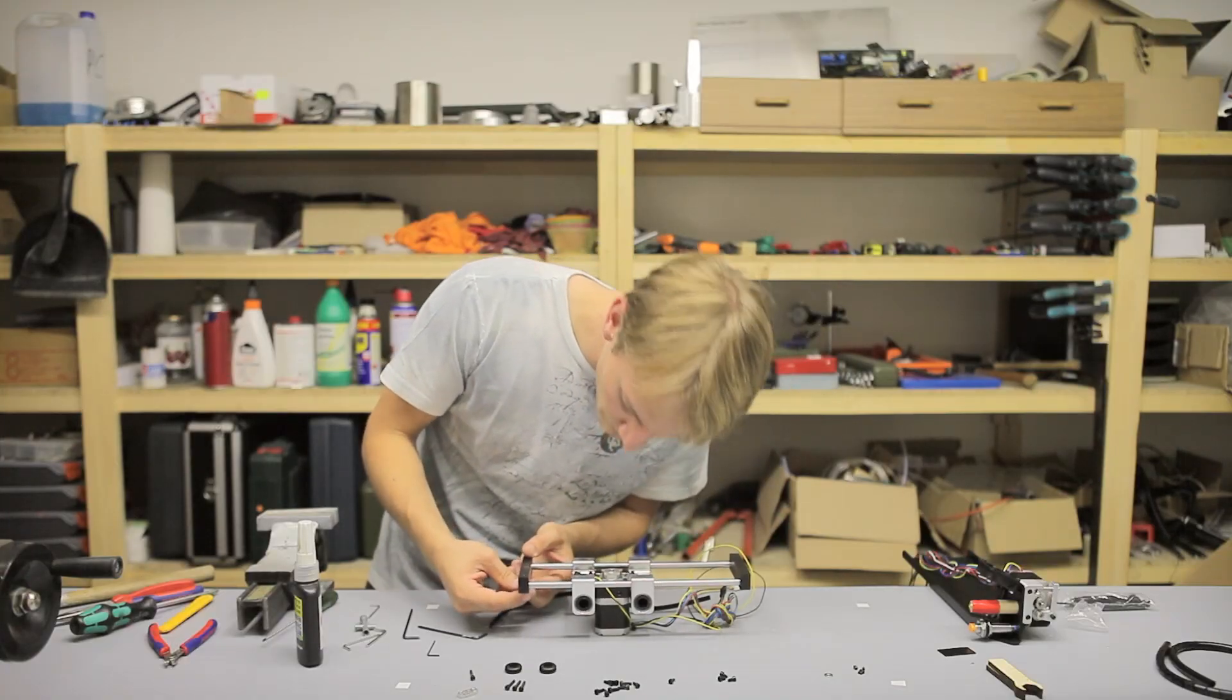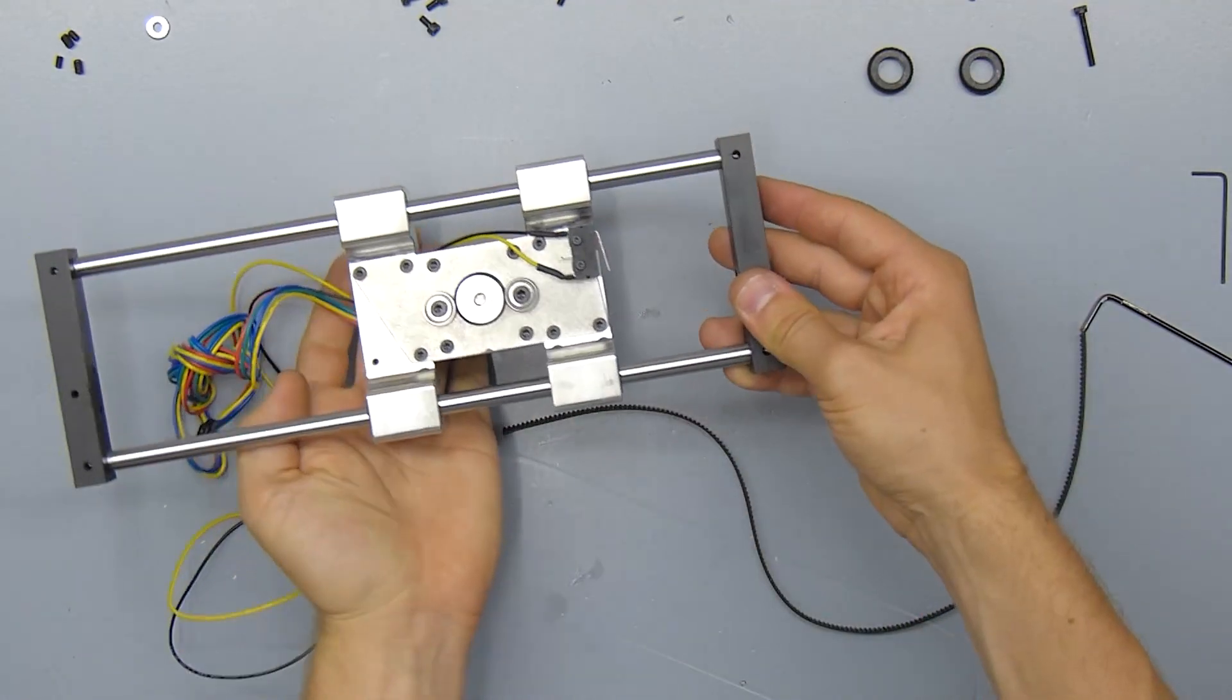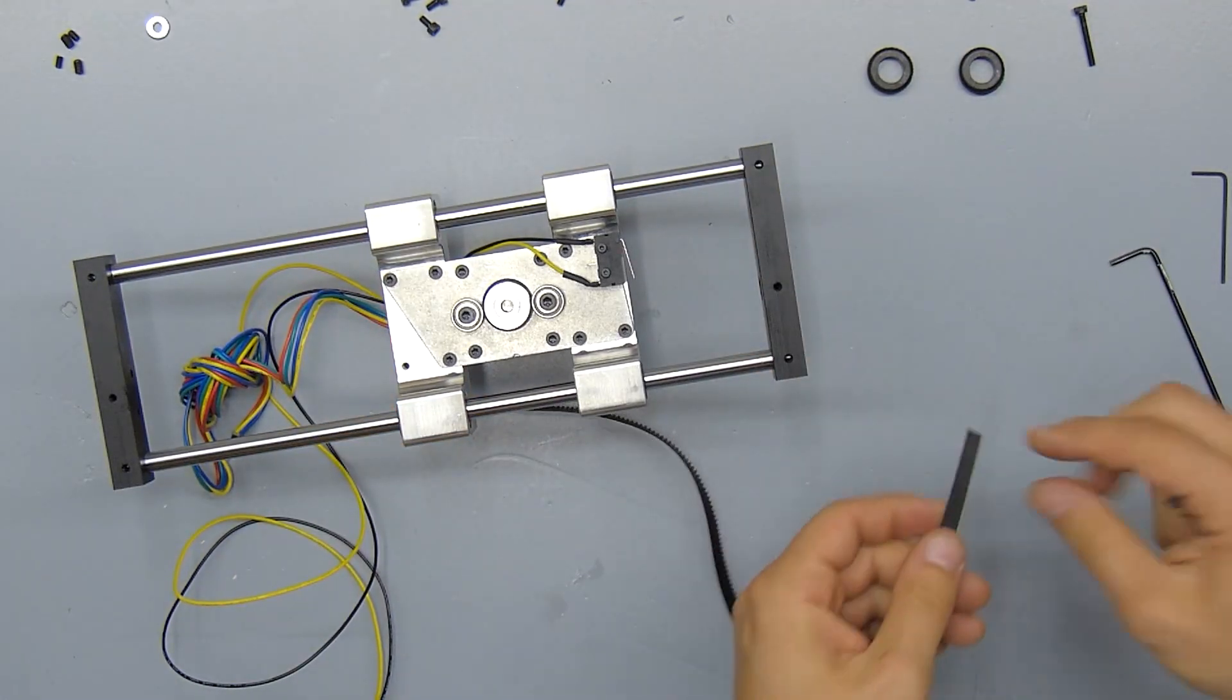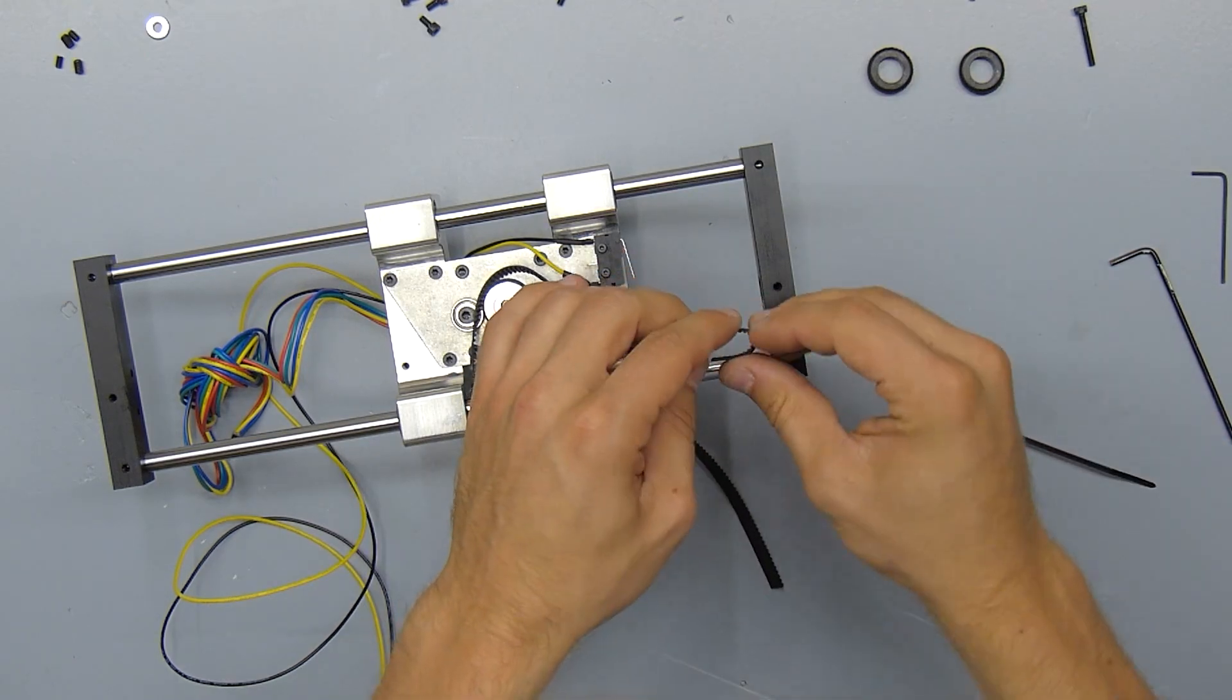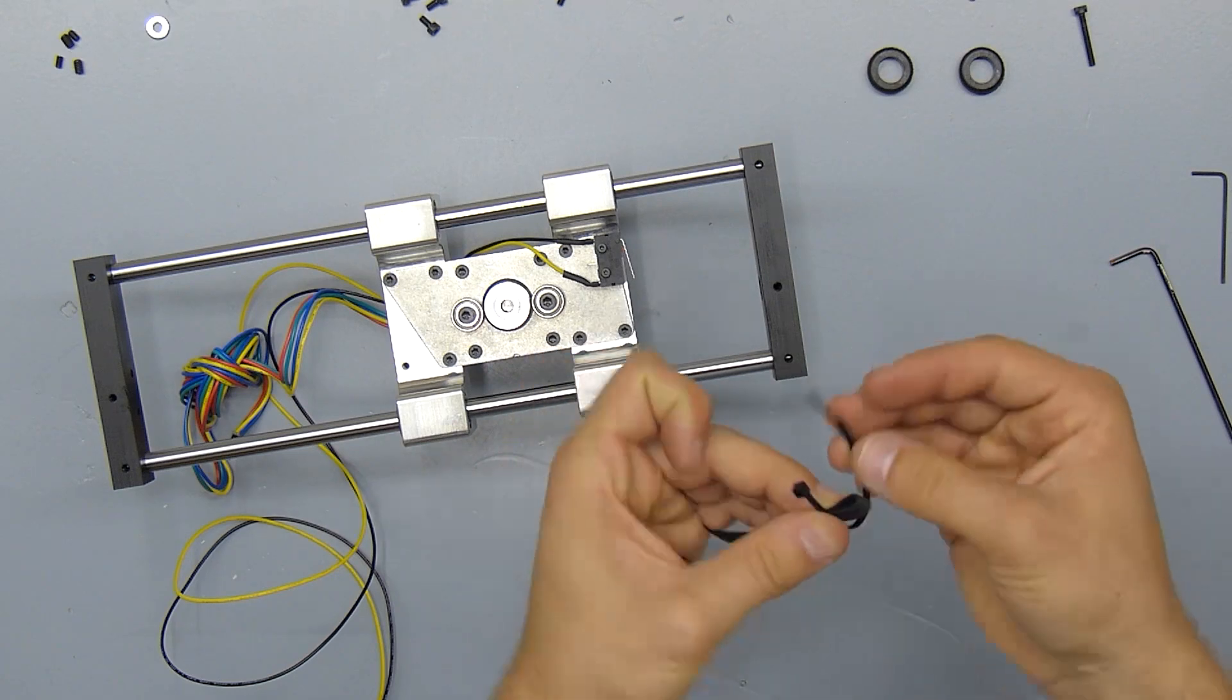To install the belt, we're going to start out on the side that has the single hole, and on that side we're going to thread a 10mm M3 screw into the bottom of the block.